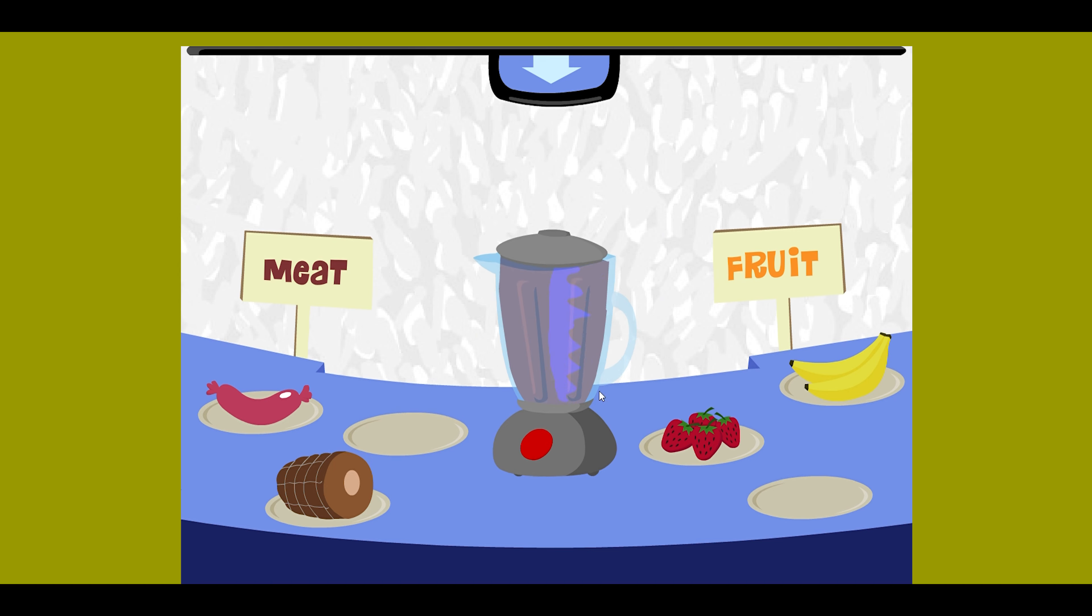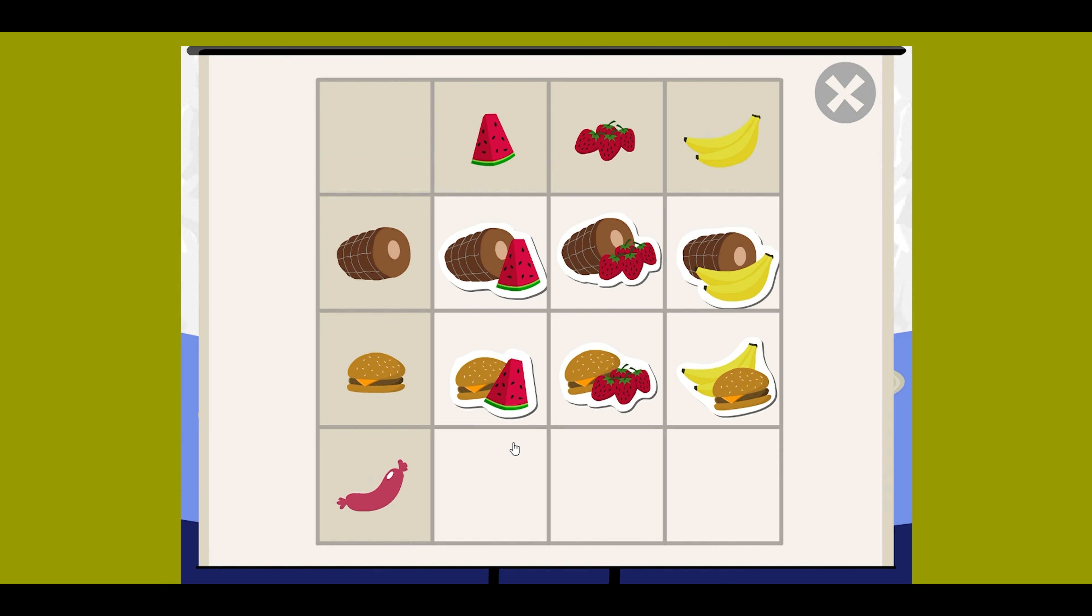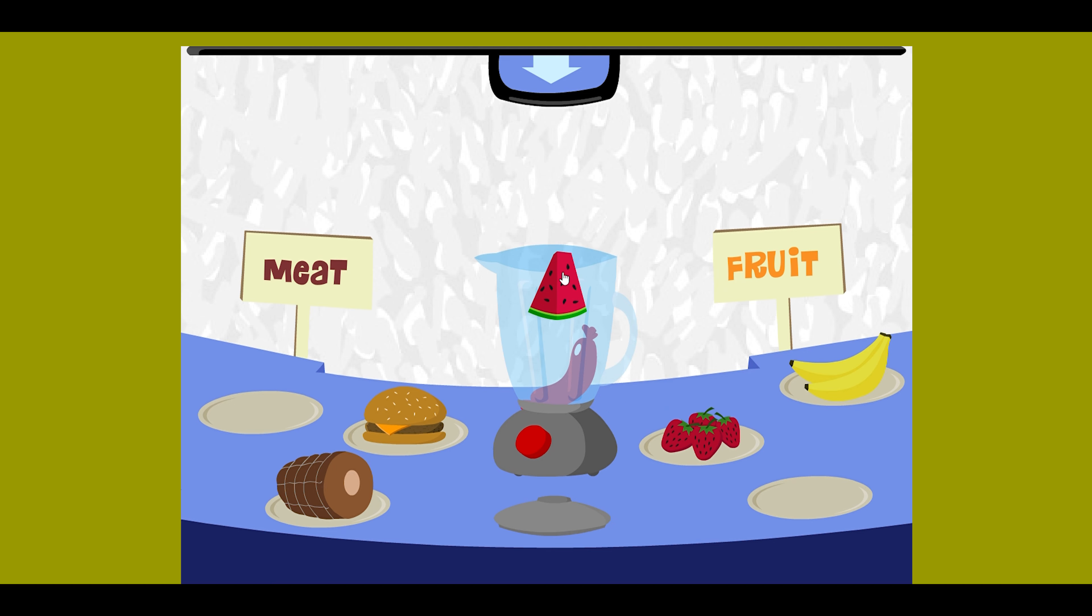Hamburger and watermelon! Hamburger watermelon! Or should I say... Hambermelon! Hamburger and strawberry! Hamburger strawberry! Known from now on as... Strawburger! Banana and hamburger! Hamburger banana! Love it! Sausage and watermelon! Sausage watermelon! Better known as... Water... Mossage! Sausage and strawberry! Sausage strawberry! Or as I call it... Strawbossage! Banana and sausage!